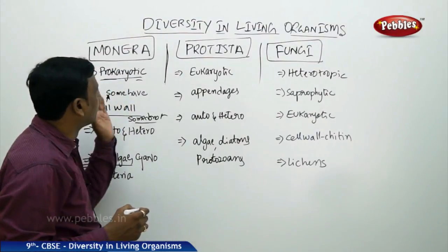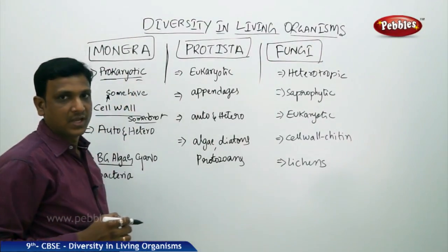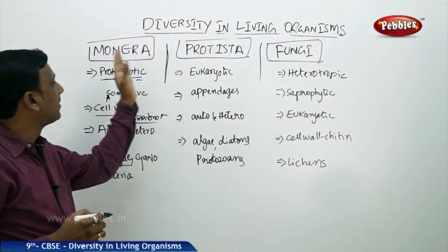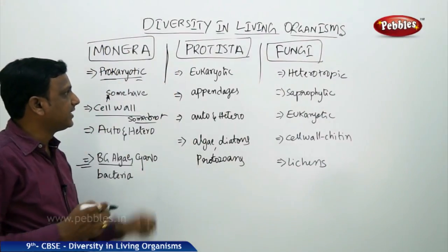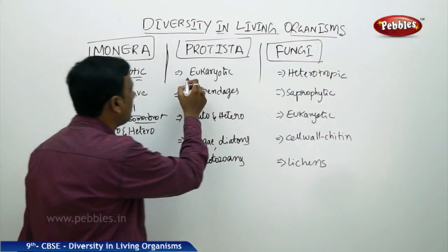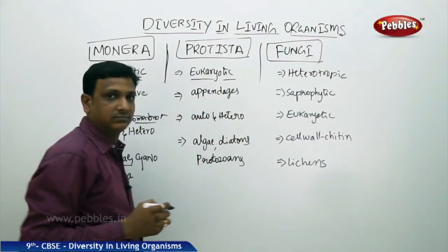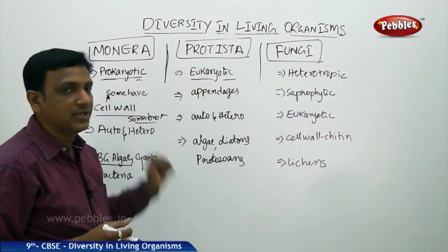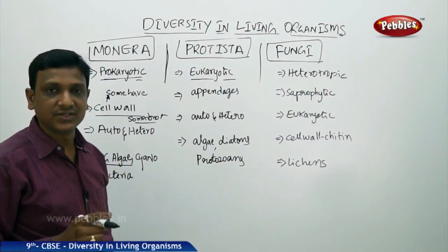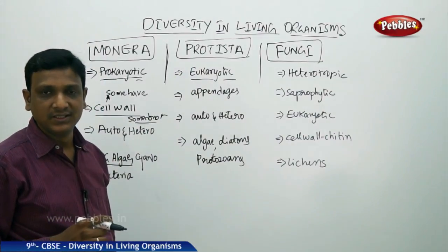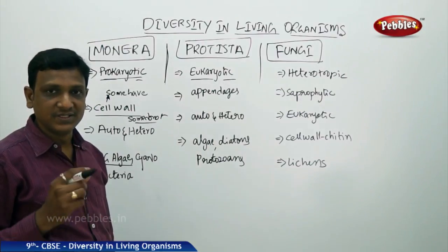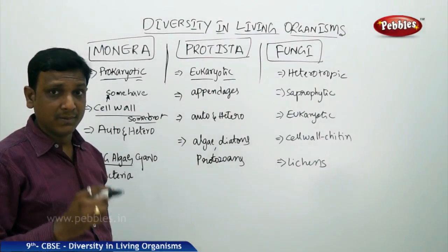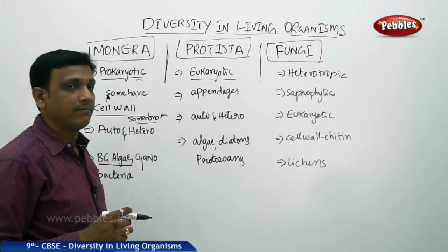Now let us move to the next group, Protista. Protista is a bit higher compared to the Monerans. It includes unicellular organisms that are eukaryotic in nature. These are also unicellular, but their cell structure has a defined nucleus, specific cell organelles — the nucleus and organelles are membrane-bound, which is found in Protista.